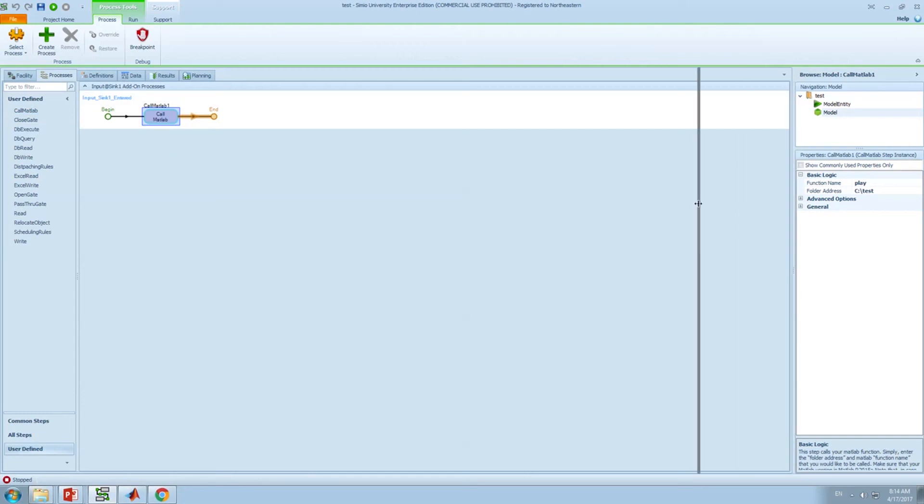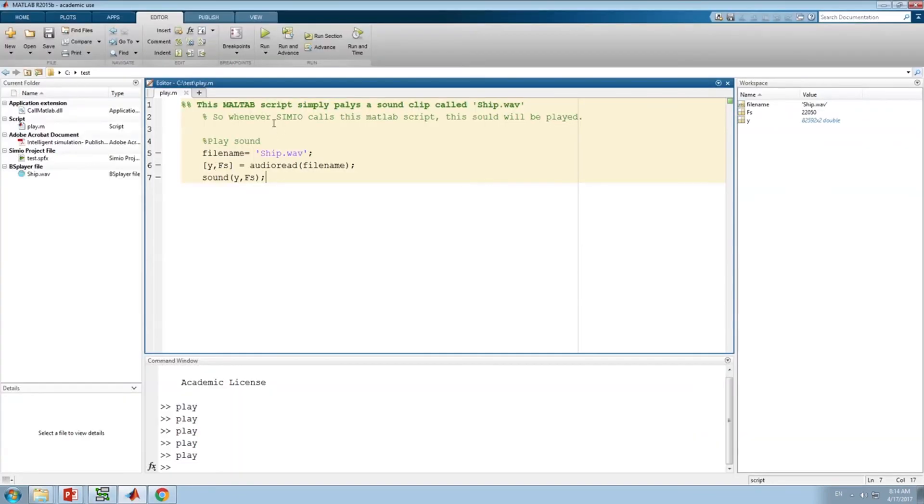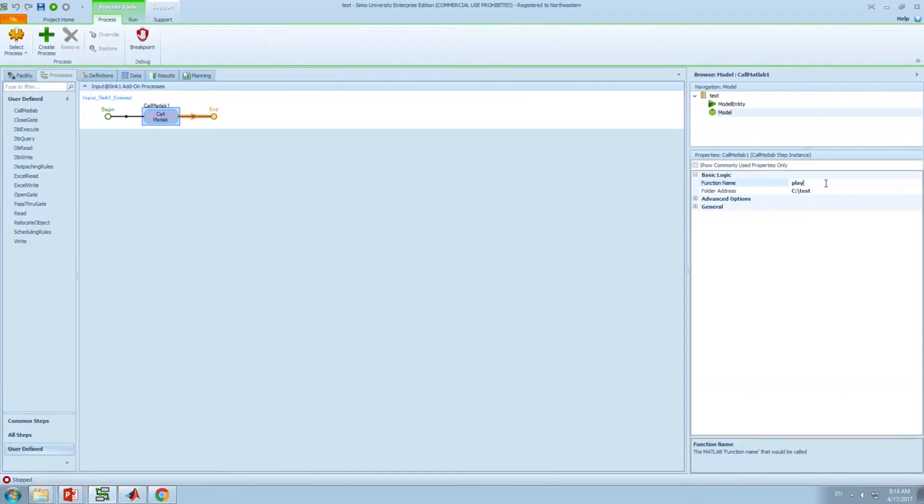In order to use this step, you have to provide two inputs. First thing is the name of the MATLAB function. So, if I go back, you can see the name of my MATLAB function is called play. That's it. So, I put the name of the function for the first input. The second input is the address or the directory that your MATLAB file is located in. In this case, it's drive c and folder tests. I put the function name as play and for the address c tests.